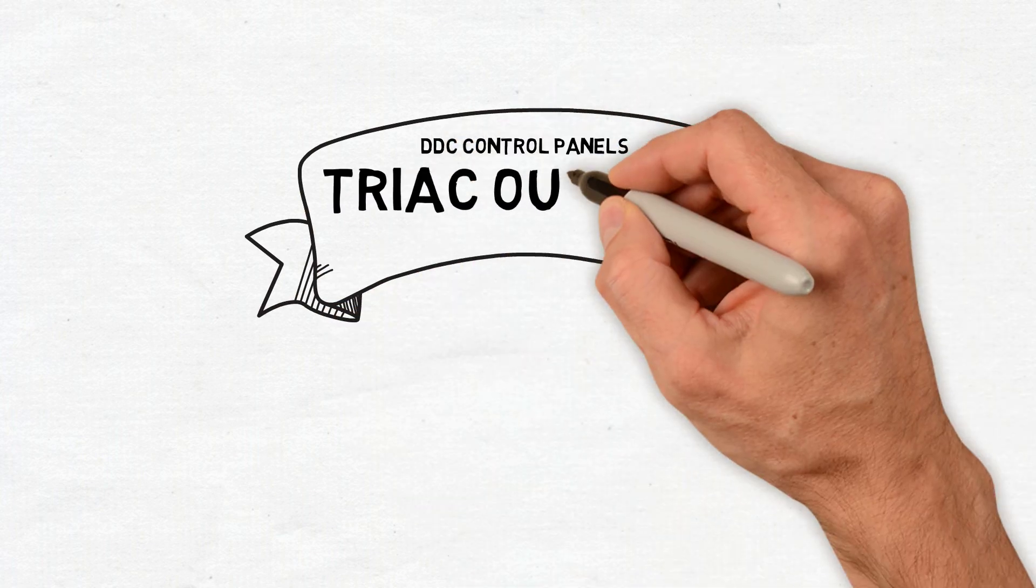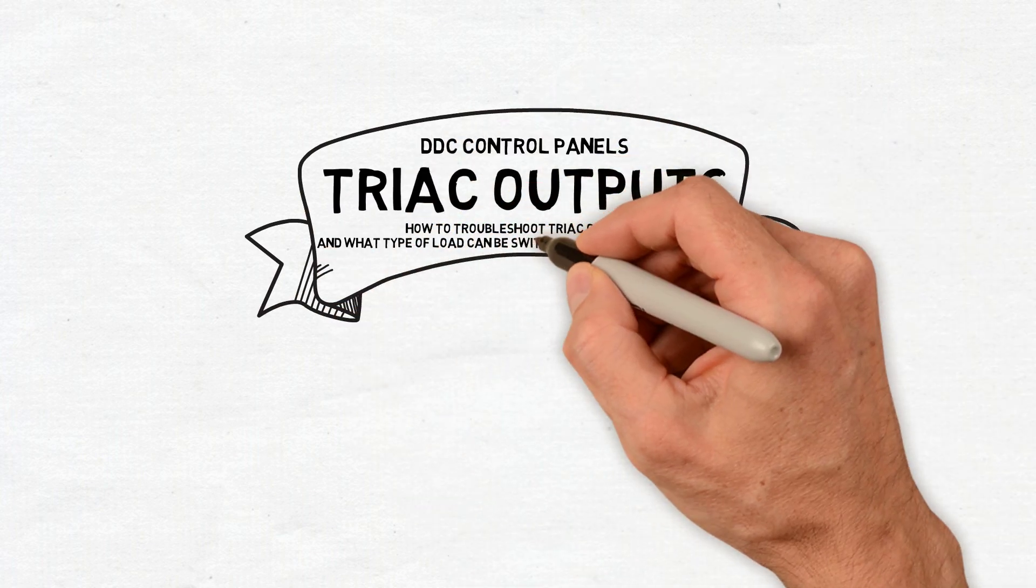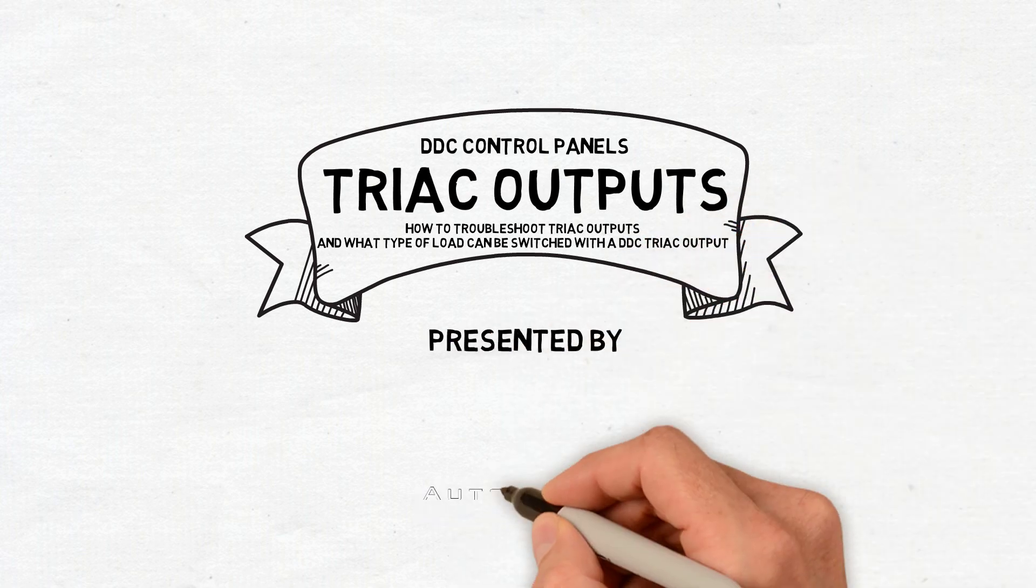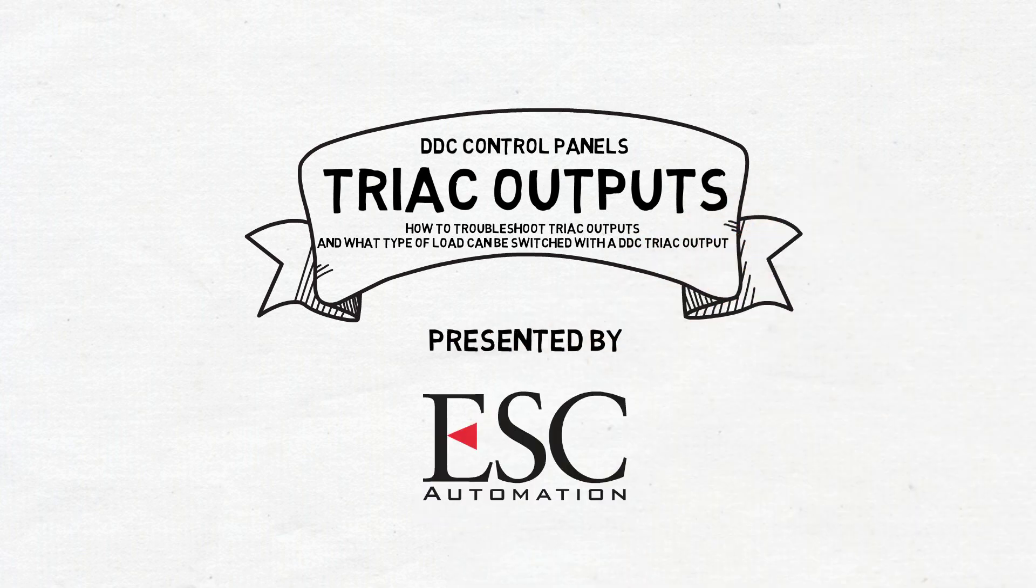This video is about triac outputs on DDC control panels, how to use a meter to troubleshoot loads being switched between triac outputs, and what type of load can be switched with a DDC triac output.